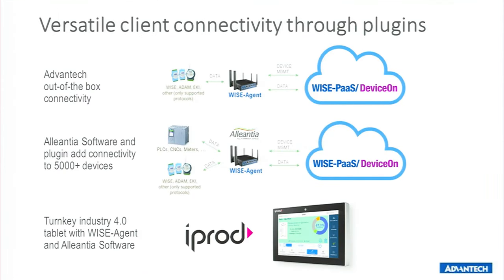Starting with an Advantech Gateway, you have WiseAgent on top and out-of-the-box connectivity to a lot of Advantech devices like different sensors. And by creating a plugin, you can add extra data sources. One of our partners, Allianzia in Italy, has done just that. Their software is a protocol converter that has support for thousands of devices like different PLCs, CNCs, etc. They have created a plugin for WiseAgent. So by using the Advantech Gateway and installing the Allianzia software and that plugin, those PLCs and CNCs will suddenly be able to connect to the cloud and you have the data in the cloud.